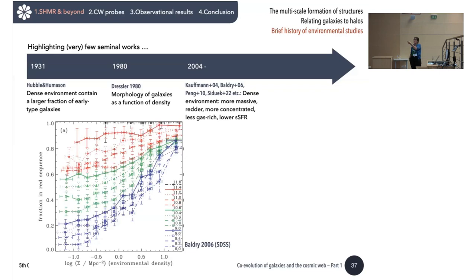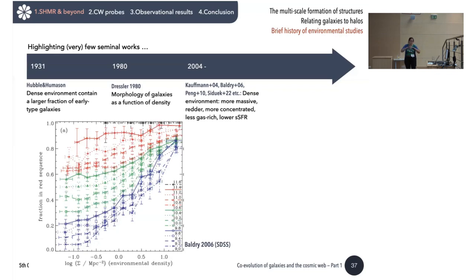The fraction of galaxies in the red sequence is higher in high-density environments, seen at all stellar masses. So we can keep this in mind: in dense environments, we have more massive, redder, more concentrated, less gas-rich galaxies. The definition of 'dense environment' varies — people use the distance to the nearest galaxy, or a smoothed version of the density field — but this result is relatively robust at least at low redshift.